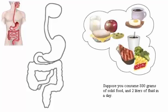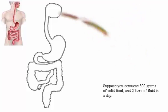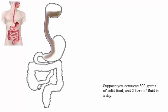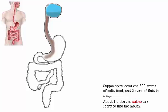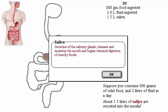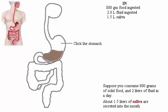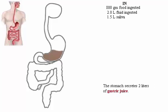Suppose you consume 800 grams of solid food and 2 liters of fluid in a day. About 1.5 liters of saliva are secreted into the mouth. The stomach secretes 2 liters of gastric juice.